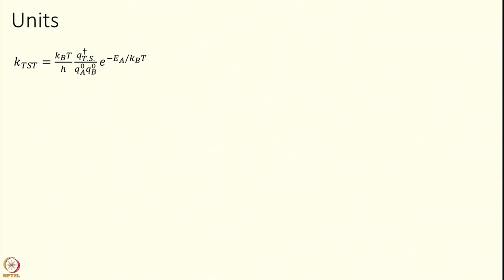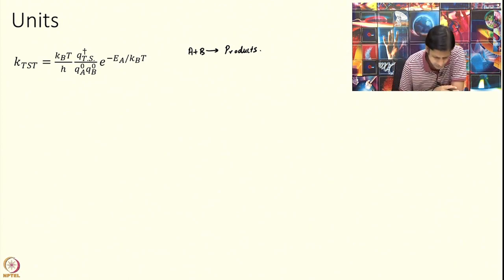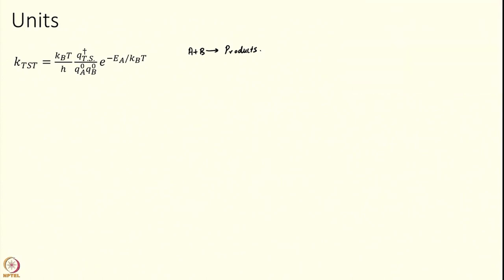Let us look at what the units are. We have made a special case where this relation holds only for a bimolecular reaction — this is not a hard requirement; if you have more reactants you just change the denominator. But let us stick to bimolecular for a little while and understand what the unit of the rate constant is.